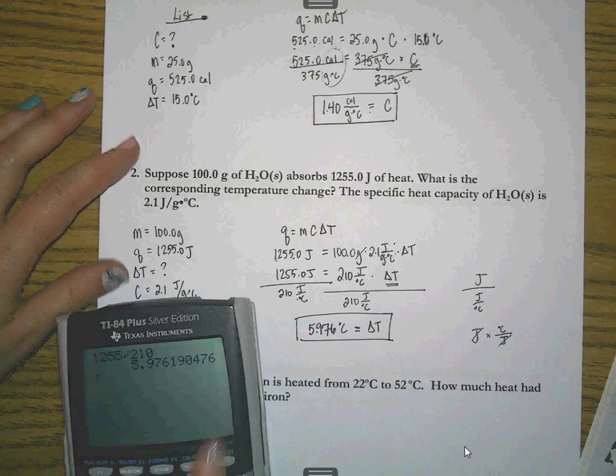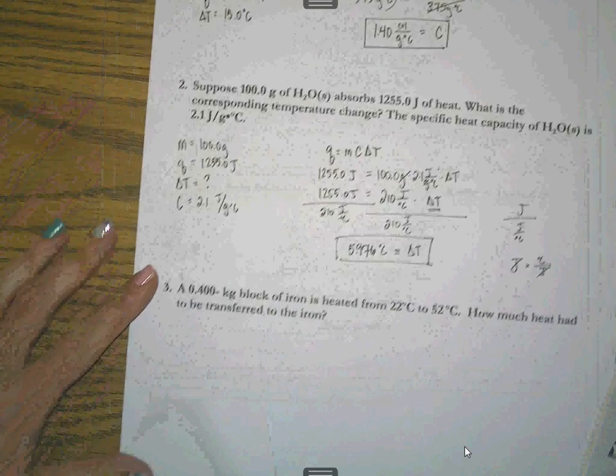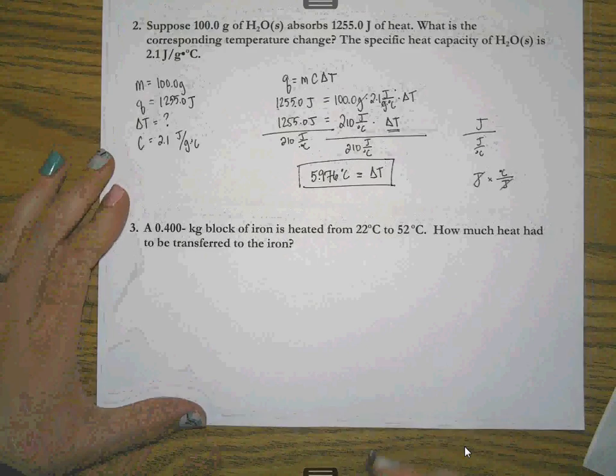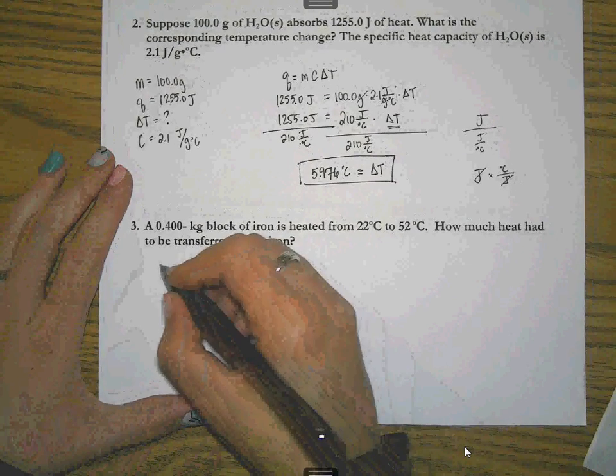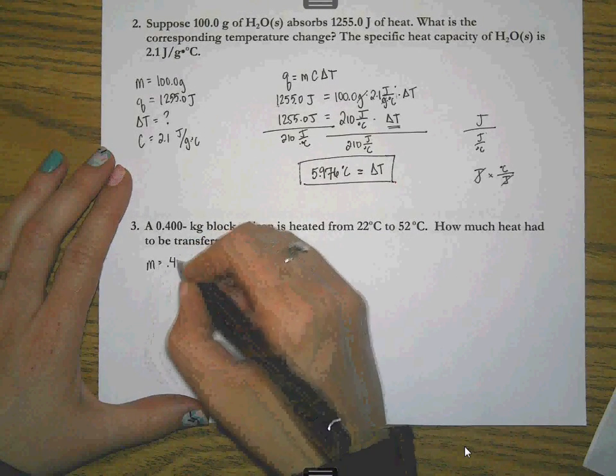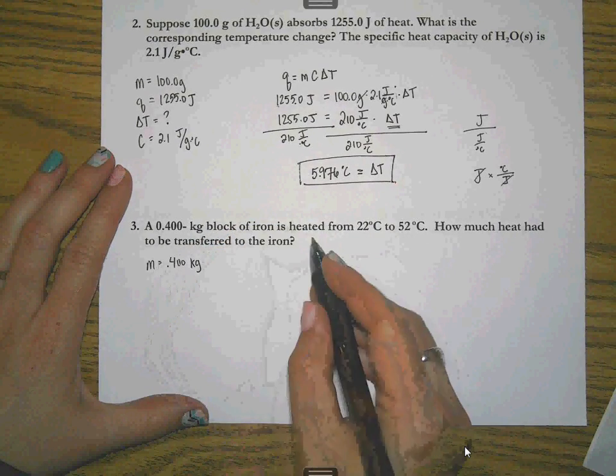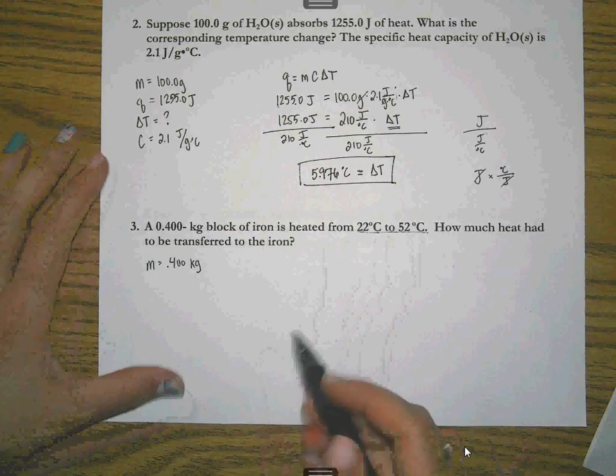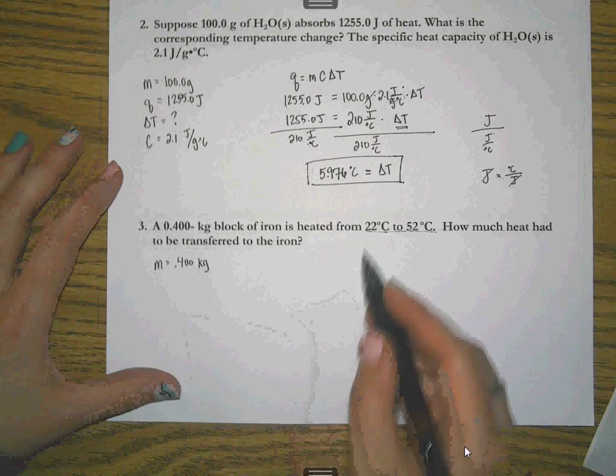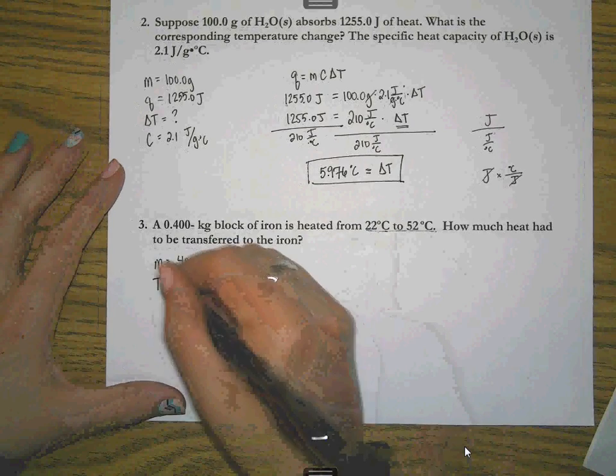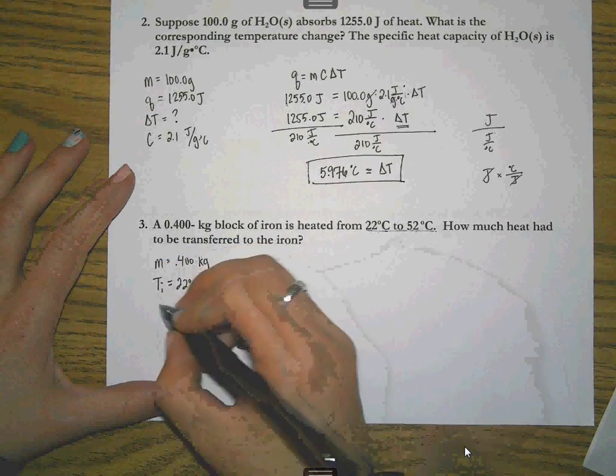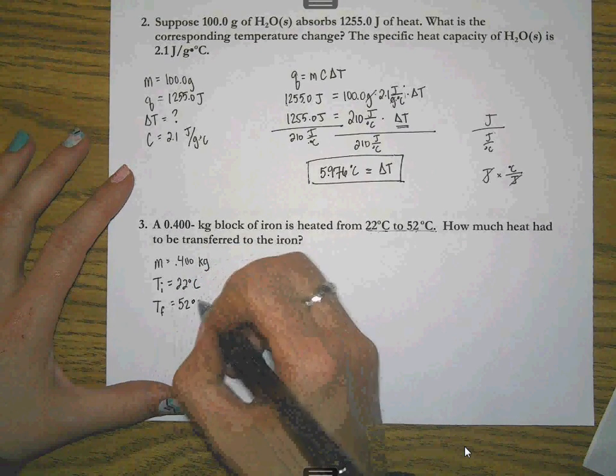Now, the last problem that I have for you is still just a smidge different. The problem says that you have a 0.400 kilogram block of iron. So that's a mass. Mass is 0.400 kilogram. It's heated from 22 to 52. Okay. For once, I don't have a delta T. If it's heated from 22, that means it started out at 22 degrees Celsius and it's heated to 52, which means that's a final temperature.